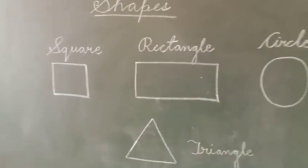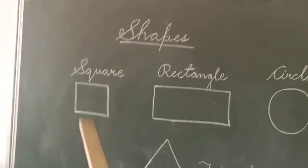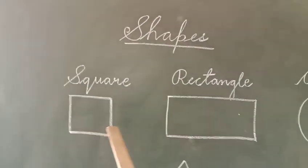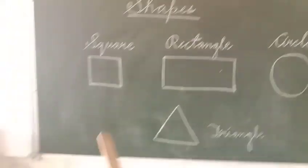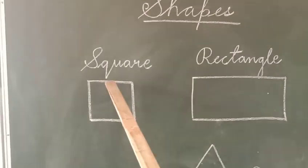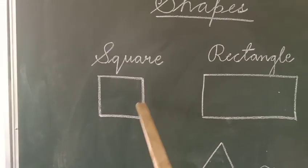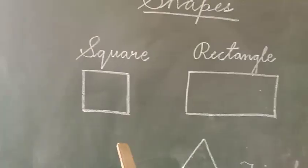If you want to learn more about the shapes, how many lines are there in the square? How many sides are there in the square? You can count - one, two, three, and four. And remember one thing students,